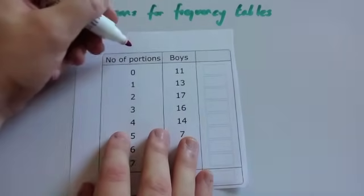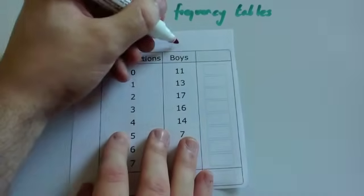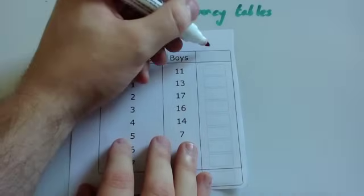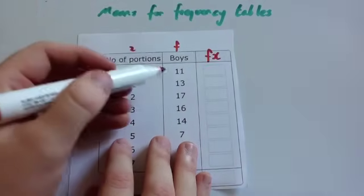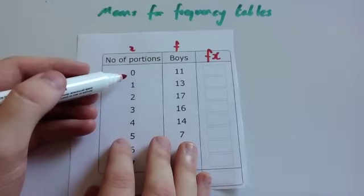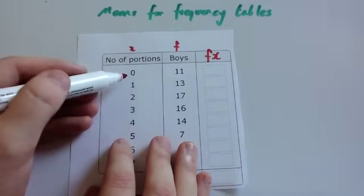Let's call this number of portions x, f frequency for the boys, and this column we quite often call fx. Instead of doing 11 zeros and adding them up, you could just do 11 times 0. 11 times 0 is 0.